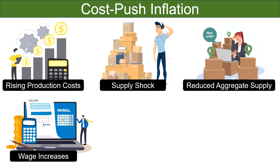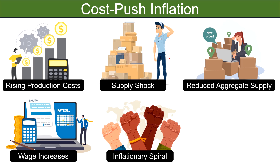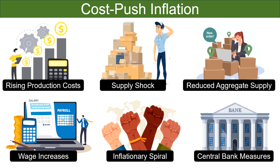Wage increases: if there is a widespread increase in wages across industries, businesses may pass these higher labor costs on to consumers through higher prices for their products. Cost-push inflation can also contribute to an inflationary spiral: as businesses raise prices in response to increased costs, consumers in turn may demand higher wages to cope with rising living expenses, creating an ongoing inflationary trend. Central banks often respond to cost-push inflation by adjusting monetary policy, and if inflation expectations become prolonged, they might implement measures to tighten monetary policy and cool down the economy.